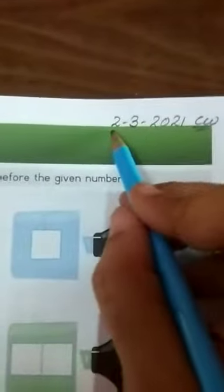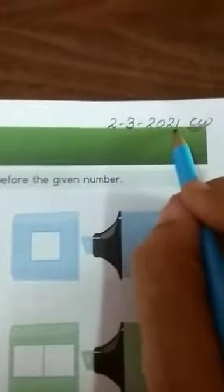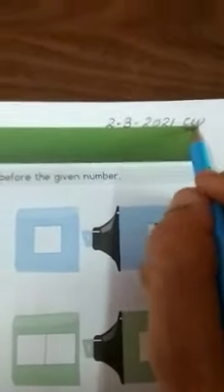So first put today's date 2, 3, 2021 and write down CW. So children, today we will do Before Numbers, 1st Part 1.